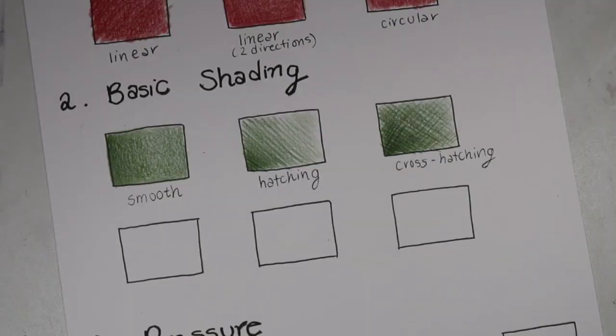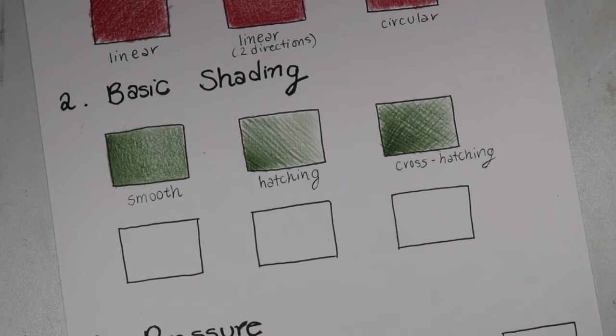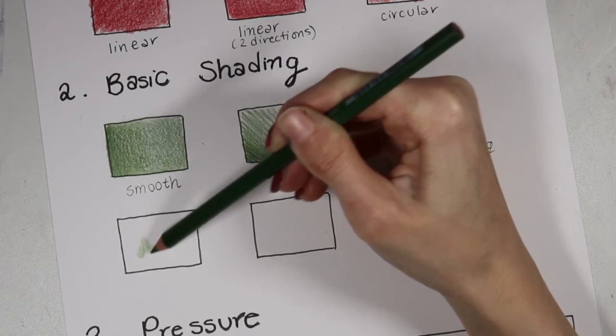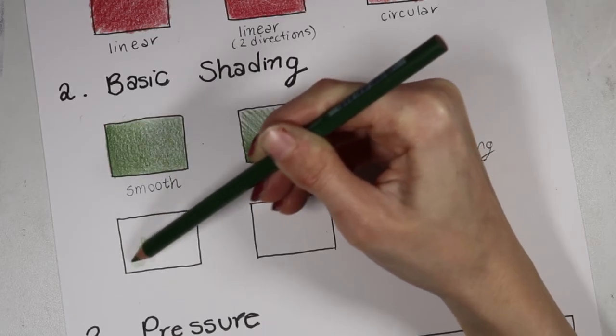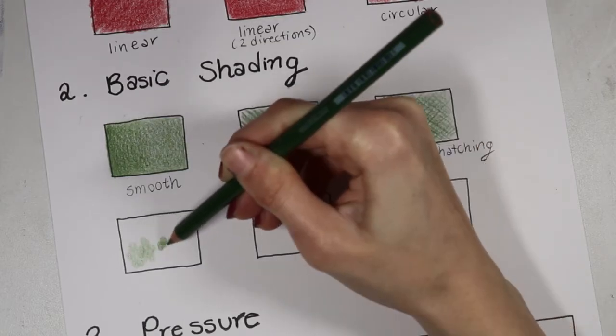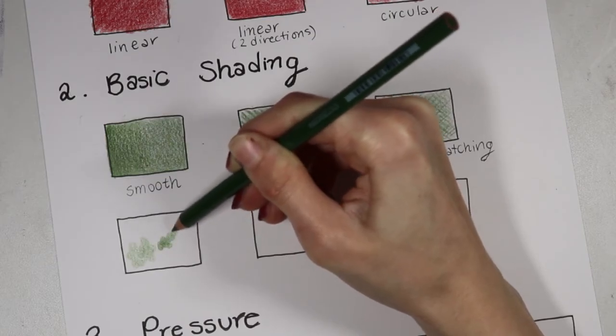Okay, so not everything that we use colored pencil for requires that we do smooth shading like this, so let's go through a couple of other types of shading that we might need to know how to use. So if you're coloring something that's fluffy or curly, you might find it beneficial to color in little circular motions like this. Anything like curly hair or maybe if you're drawing a portrait and the person has a beard.